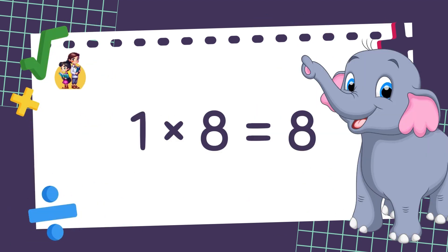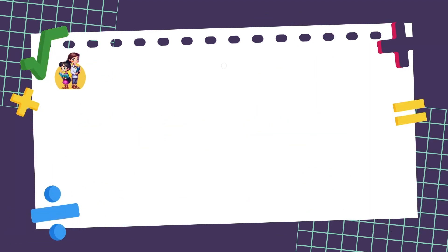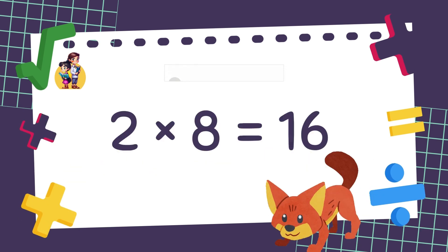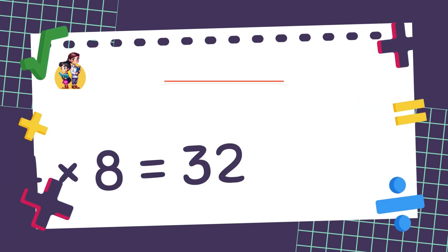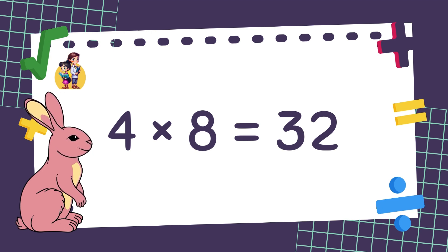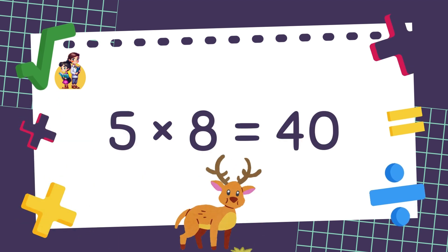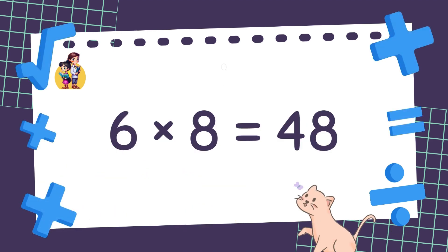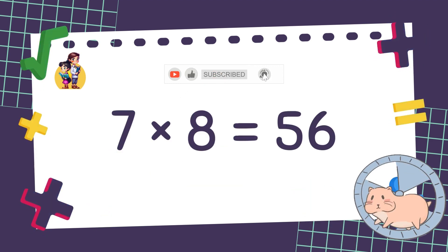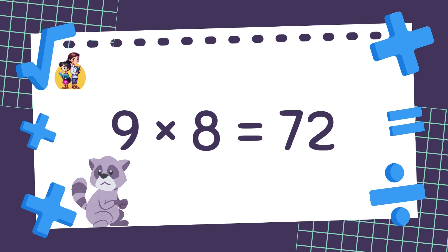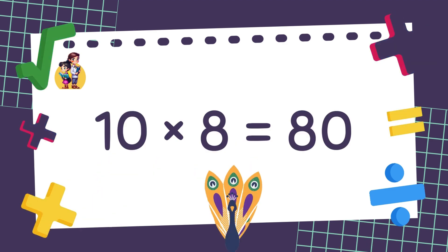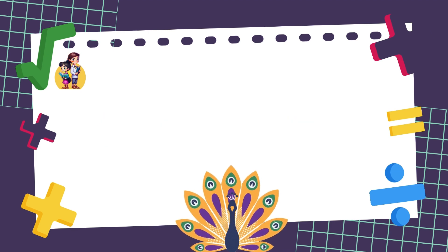1 x 8 is equal to 8. 2 x 8 is equal to 16. 3 x 8 is equal to 24. 4 x 8 is equal to 32. 5 times 8 is equal to 40. 6 times 8 is equal to 48. 7 times 8 is equal to 56. 8 times 8 is equal to 64. 9 times 8 is equal to 72. 10 times 8 is equal to 80. Well done!